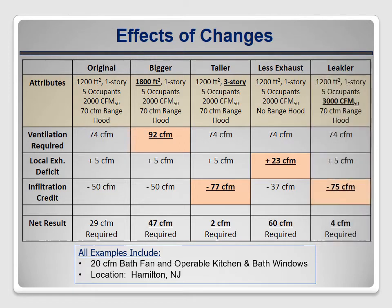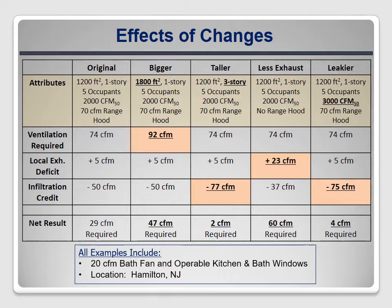Finally, if the house is leakier — with a blower door result of 3000 instead of 2000 CFM at 50 pascals — the infiltration credit goes up from 50 to 75 CFM, reducing the required fan size to only 4 CFM. It might seem silly to install a fan for just 2 or 4 CFM, and the 2016 version of ASHRAE 62.2 addresses this by adding a statement that if the calculated fan flow requirement is less than 15 CFM, a system doesn't need to be installed. Some programs may have adopted this requirement for earlier versions of the standard — check with your program staff to find out.